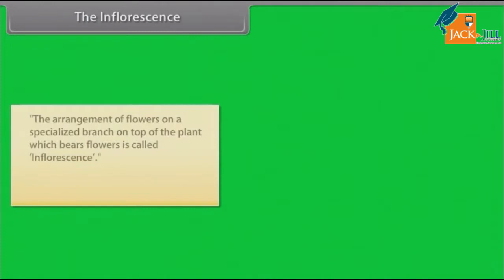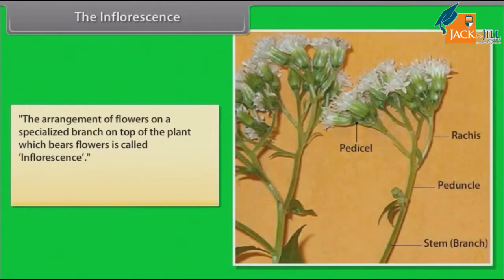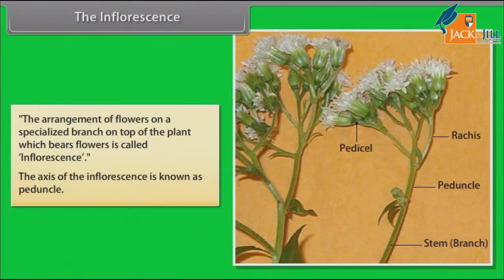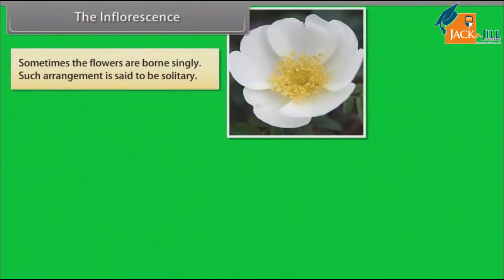The arrangement of flowers on a specialized branch on top of the plant which bears flowers is called inflorescence. The axis of the inflorescence is known as peduncle. Sometimes the flowers are born singly; such arrangement is said to be solitary.